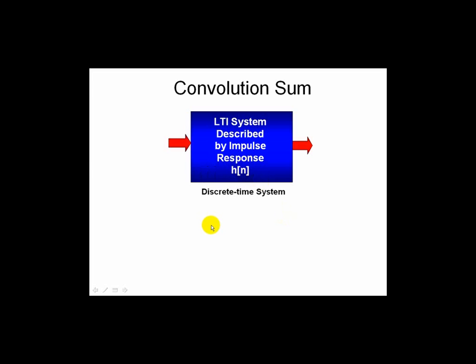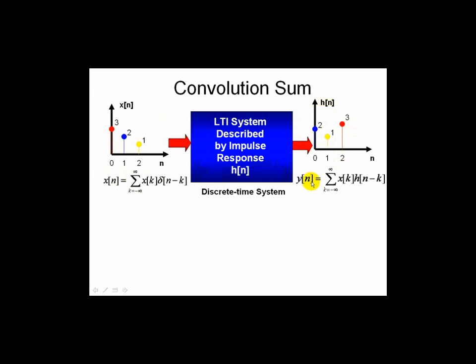Our arbitrary input is described by this sequence for this example, and our corresponding impulse response due to a single impulse is described by this h sub n. We have our input sequence decomposed into a time-weighted, shifted impulse, and our output is described in terms of a weighted sum of impulse responses.